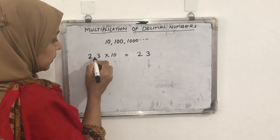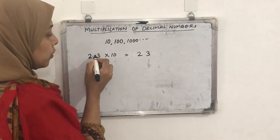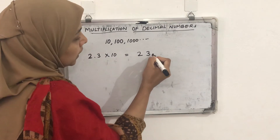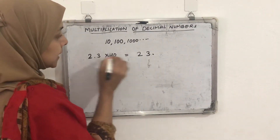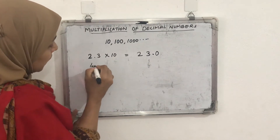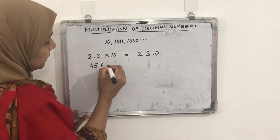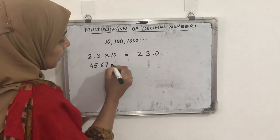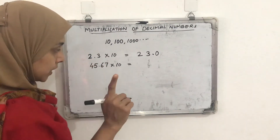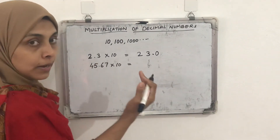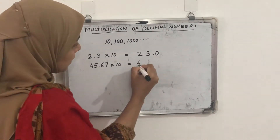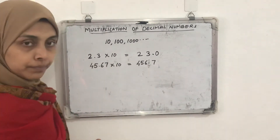When we shift the decimal point one place to the right, the decimal point moves here, giving us 23. So 2.3 × 10 = 23. Now another example: 45.67 × 10. Here 10 has only one zero, so we move the decimal point one place to the right. The decimal point shifts to give us 456.7.